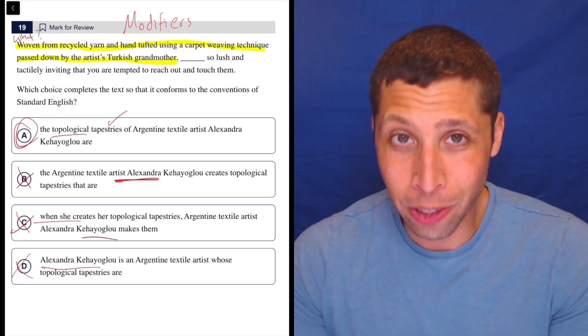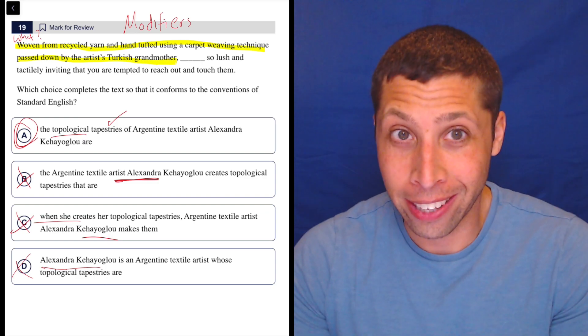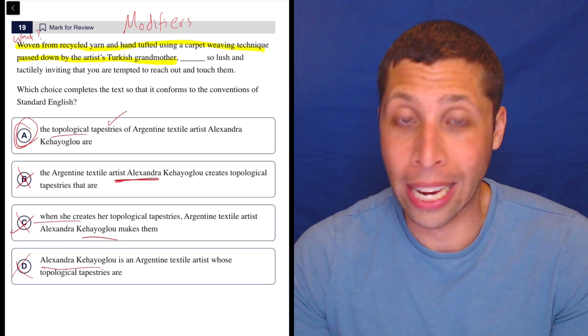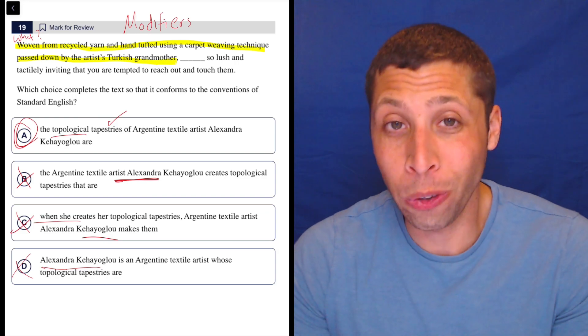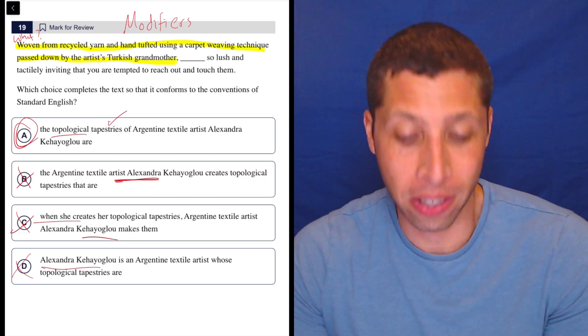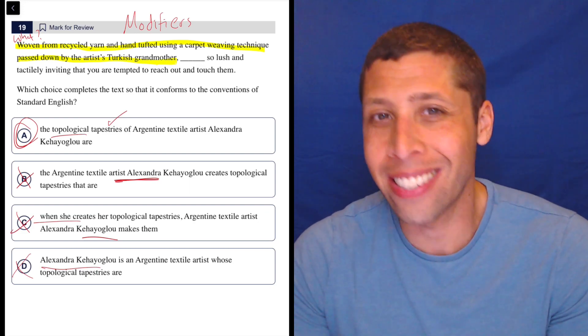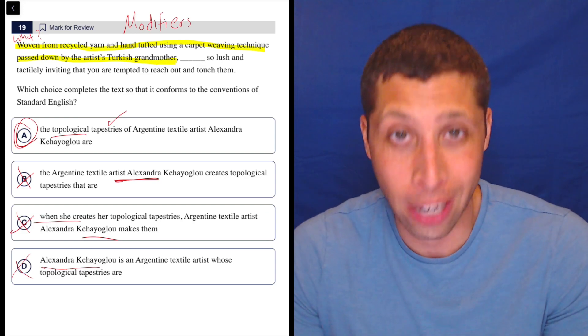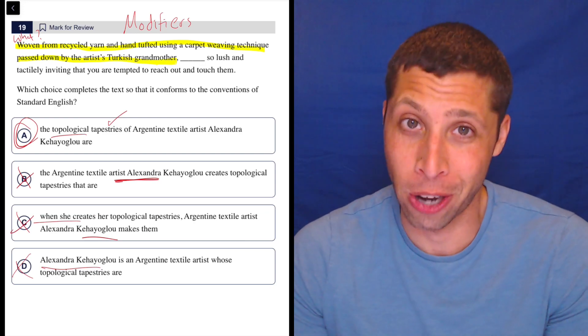So if I were doing this on a test, I would have gotten this right in like 10 seconds because I know the rule and I can read very quickly and see that only choice A starts with the tapestries. So it's not about how these choices sound. It's not about which one is shorter. It is only which one talks about the thing that the modifier was talking about.